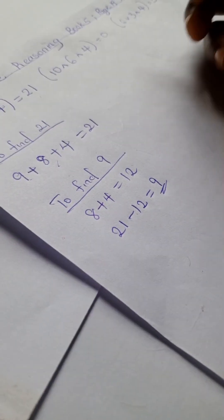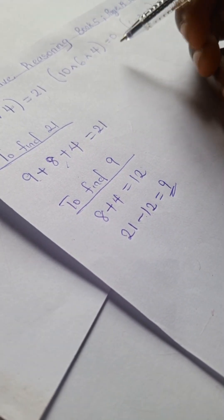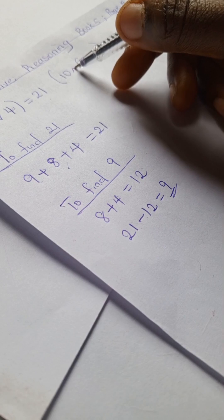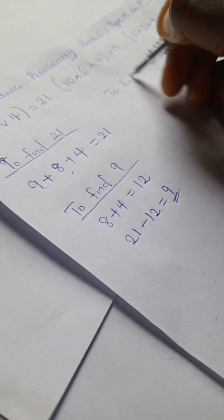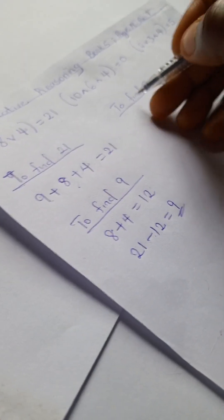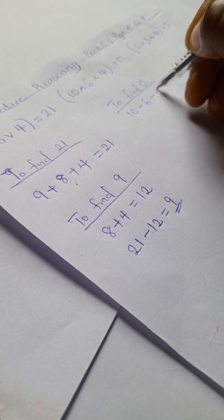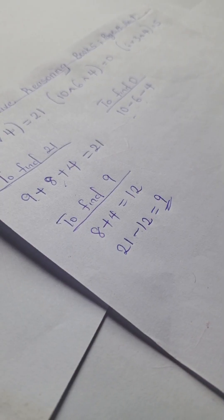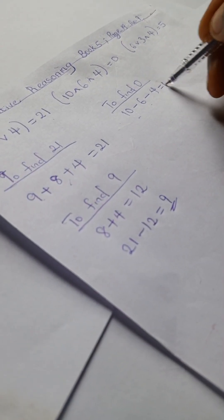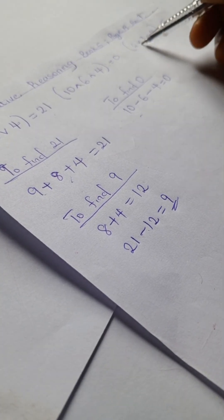So let's look at this. We have the number here and the inverse of V. To find zero, we have 10 minus 6 minus 4. 10 minus 6 is 4, and 4 minus 4 is 0.